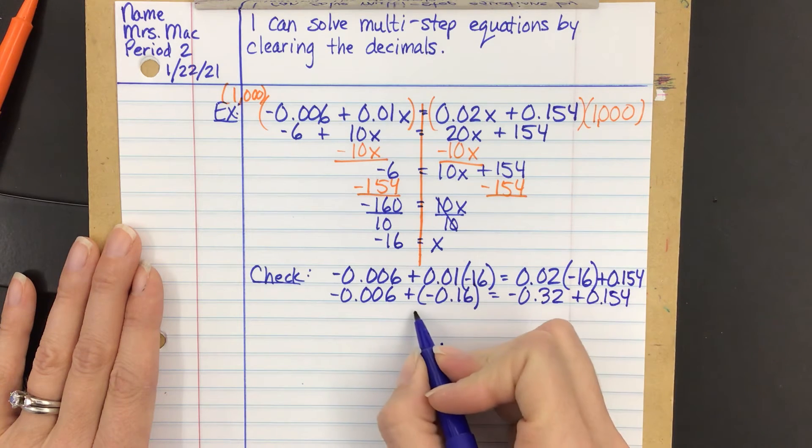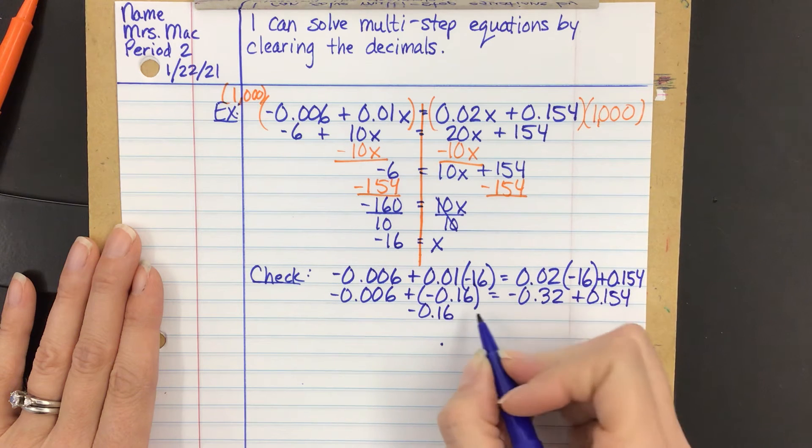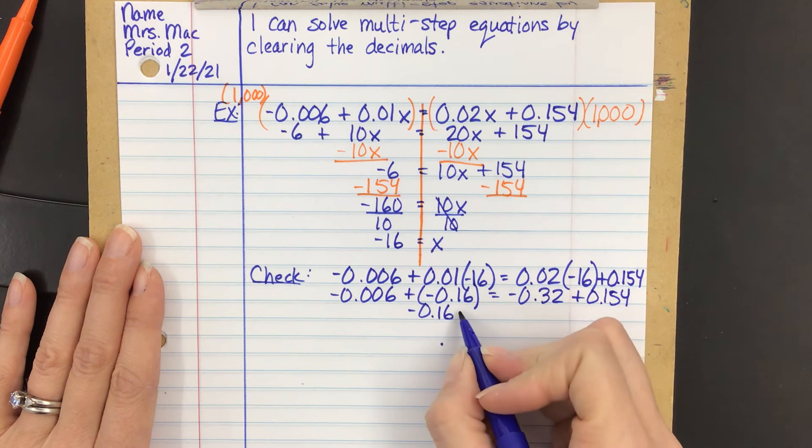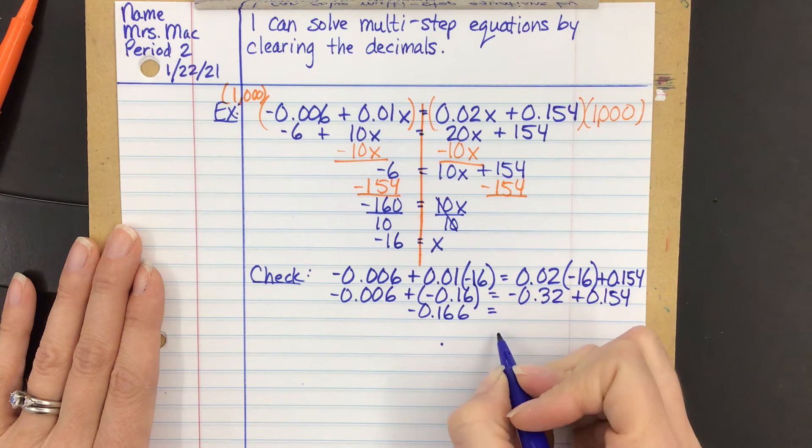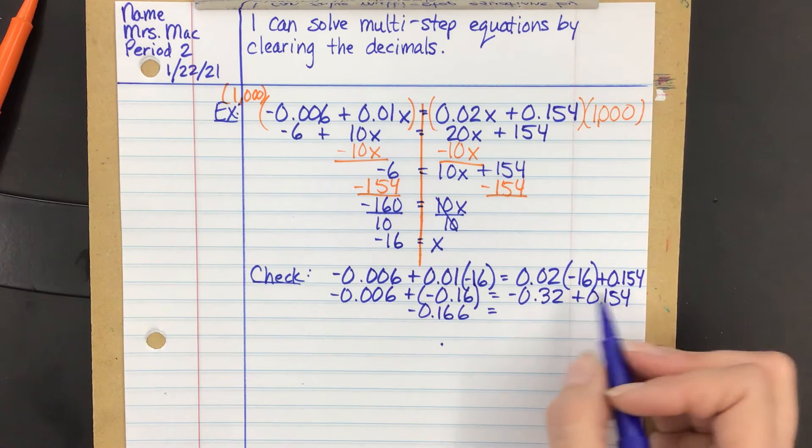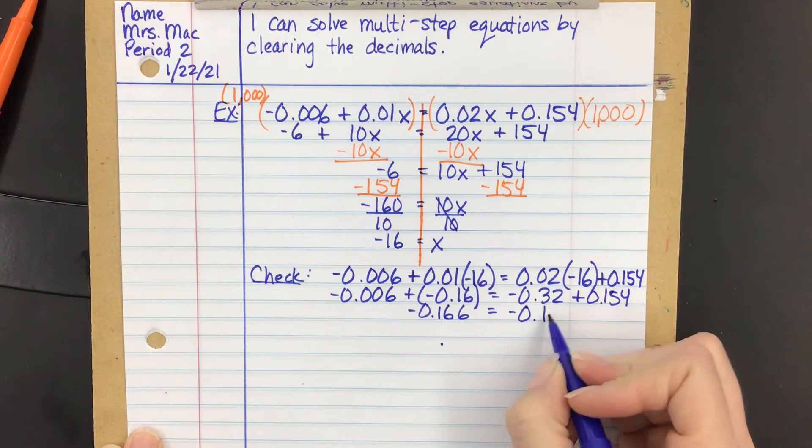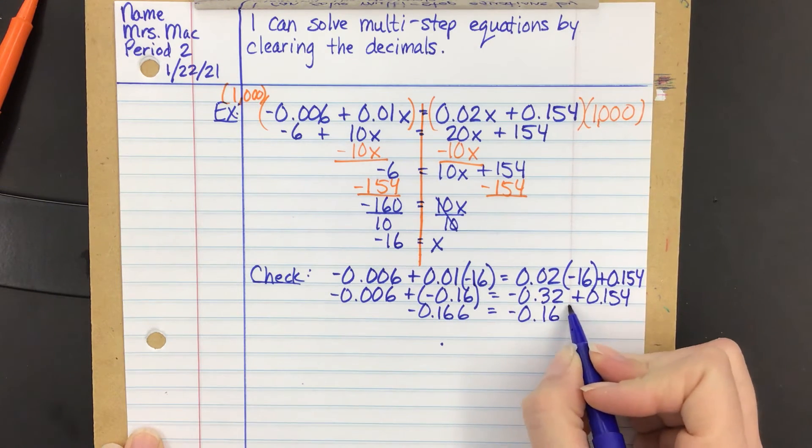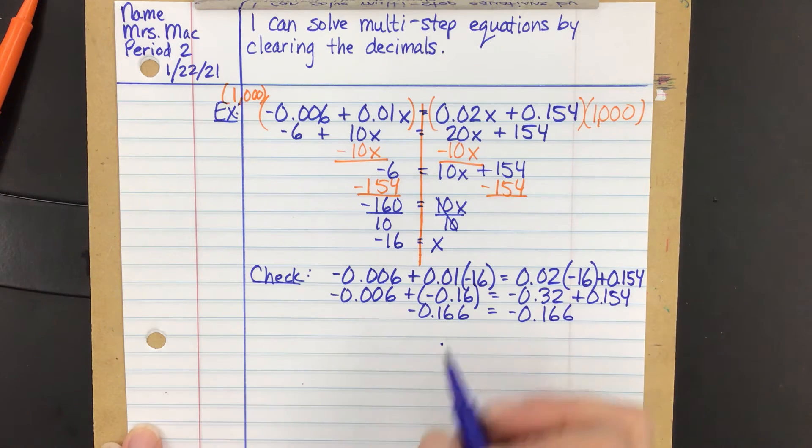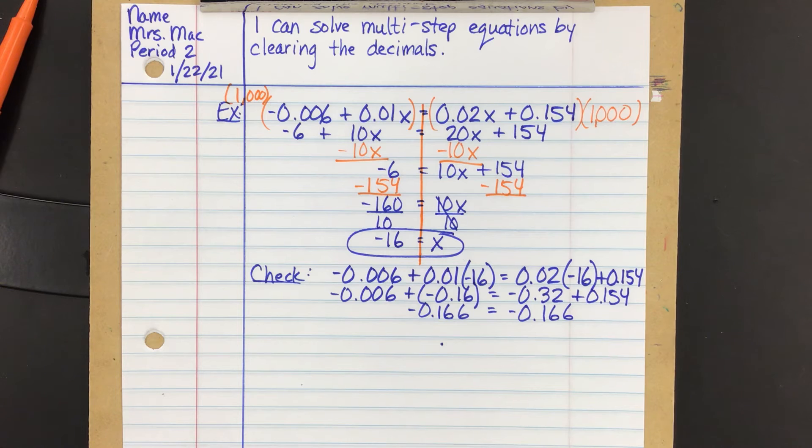And then, if I add these together, I'm going to get negative 0.166. Okay. And then here, if I subtract these because one is negative and one is positive, I am going to get negative 0.166. So I know that's correct. That's cool, right?